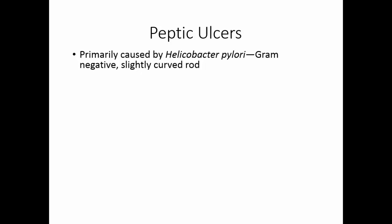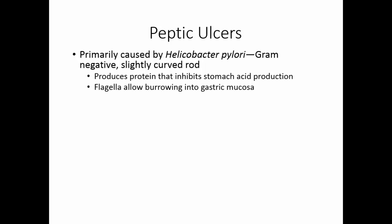Peptic ulcers are primarily caused by Helicobacter pylori, a gram-negative slightly curved rod. Since peptic ulcers occur in the stomach, this organism must overcome the acidic environment. Helicobacter pylori produces a protein that inhibits stomach acid production. It also has flagella that allow it to burrow into the gastric mucosa to escape the acid. Finally, this organism has the enzyme urease. Urea is present in gastric fluid, and when the organism breaks down urea to ammonia, it creates a small alkaline coat around itself.